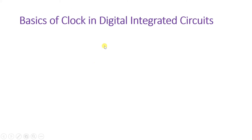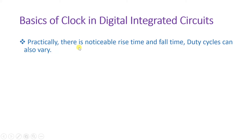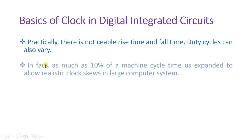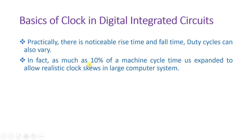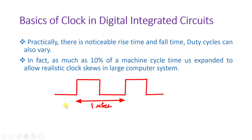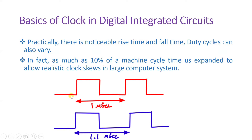Now let us discuss some other basics of digital integrated circuits. Practically you will find there is a noticeable rise time and fall time, and sometimes the duty cycle may vary. What we do is when we use a clock signal in digital integrated circuits, we expand our machine cycle by 10 percent so that realistic clock skew can operate properly. The reason is computer systems will be very complex with finite rise time, fall time, and duty cycle variation. For example, if you have a machine cycle of 1 microsecond, we expand it by 10 percent, so the new machine cycle will be 1.1 microseconds.